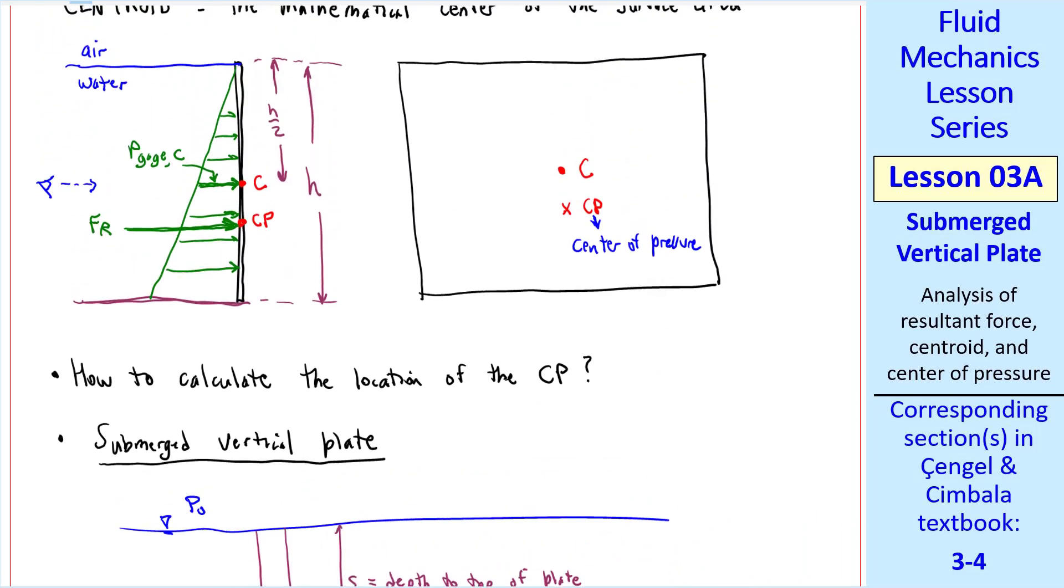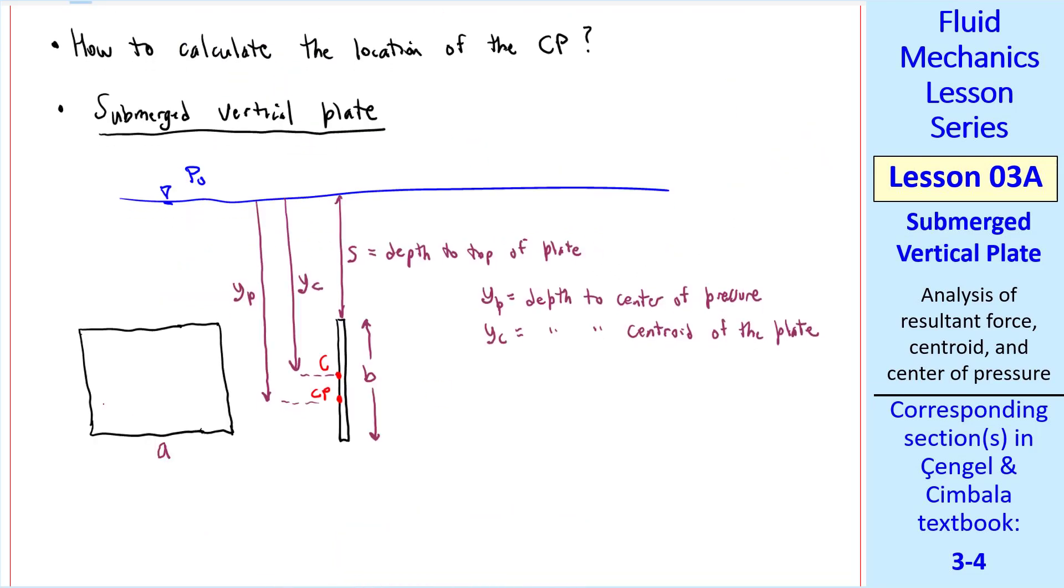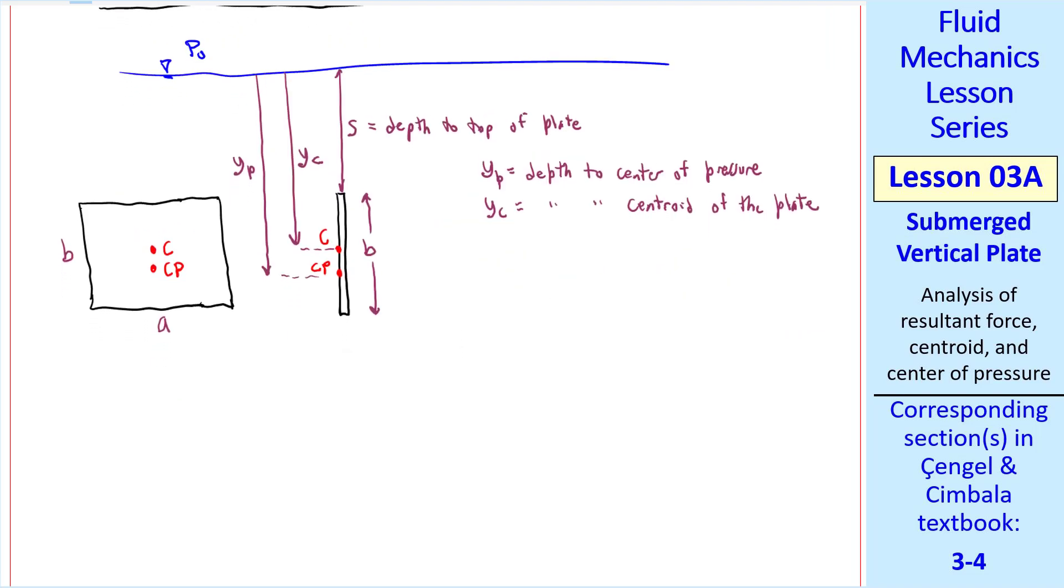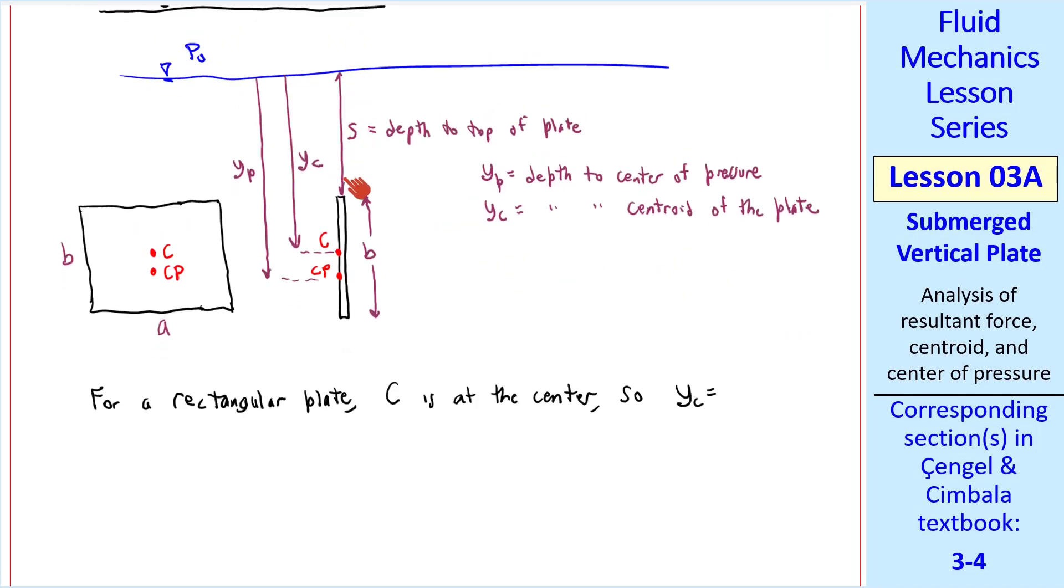Let's add some dimensions to our plate. Again, if it's a rectangular plate, let A be the horizontal dimension, and we'll let B equal the vertical dimension. B is equal to H in this case. But in general, we'll use B for the height of the plate. From the left, we see our dimensions A and B, our centroid in the middle, and our center of pressure somewhere further down. For this rectangular plate, C is at the center, so YC is S plus B over 2. What about YP, the depth to the center of pressure?